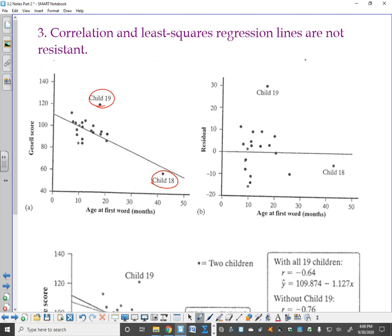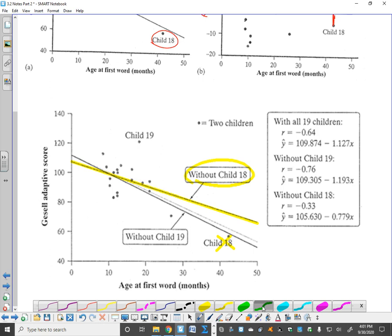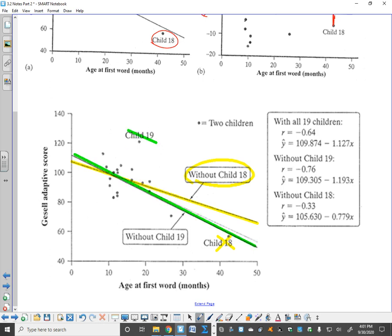Now, what I want to point out is, child 19, now stay with me for this, child 19 will have a bigger residual. Think about that. It's farther away from the line. Here's your residual plot. Child 19's residual, child 18's residual. So, child 19 has a much larger residual than child 18. But let's look at this line. This is the new line without child 18, without this kid. This is the line without child 19. So, which one influenced the line more than the other one? Let me show you the original line. The original line is right in there.